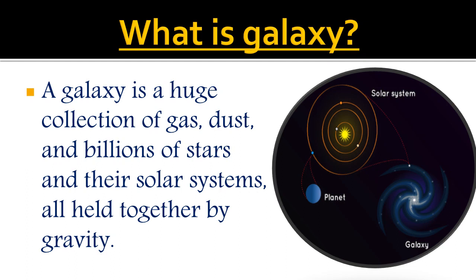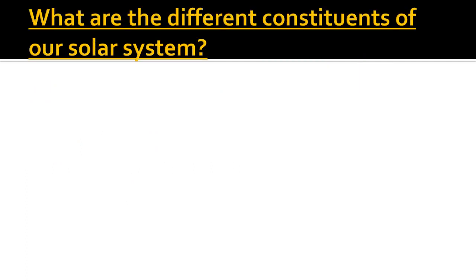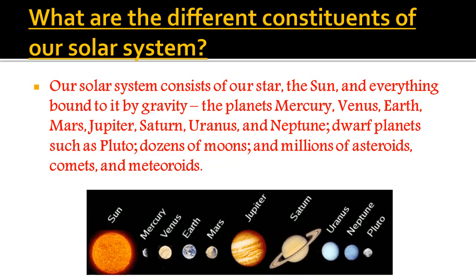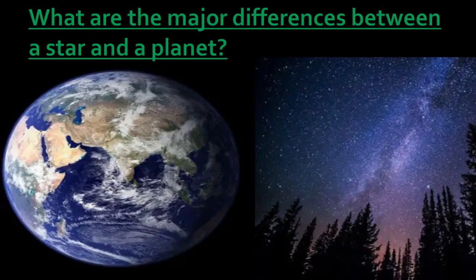In the solar system, different planets and different planetary systems are there. The constituents of our solar system include our star the Sun, and everything bound to it by gravitational force — the planets Mercury, Venus, Earth, Mars, Jupiter, Saturn, Uranus, and Neptune — as well as dwarf planets, dozens of moons, and millions of asteroids, comets, and other material.